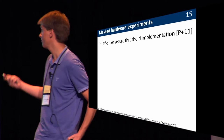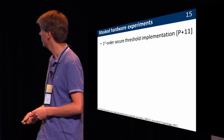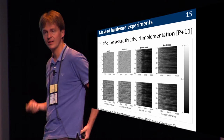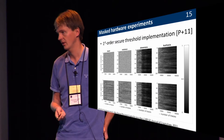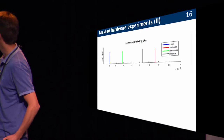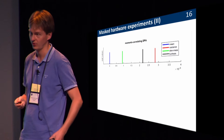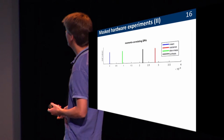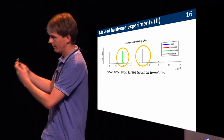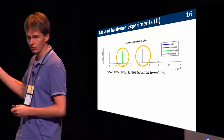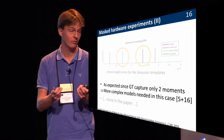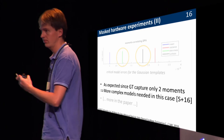We wanted to move to something more challenging: masked hardware implementation. One nice way to implement masking in hardware is threshold implementations, and that's the example we took. For Gaussian templates: no problems in the mean, no problems in the variance, but errors are clearly detected in skewness and also in kurtosis. This time it's interesting because it's a masked implementation, so there should be information there. We applied moments-correlating DPA: good news, no information at all in the mean — it is first-order secure. But we see information in the variance, skewness, and kurtosis, which is not negligible. This tool is telling us: you did Gaussian templates, but that's not enough; you should find something else if you want to extract all the information. For highly protected implementations, we need more complex models — and there was just a paper by Tobias Schneider about exactly that.